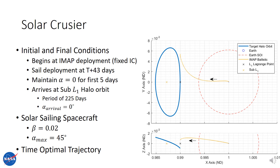NASA's Solar Cruiser mission concept is set to be a technology demonstration mission with the largest solar sail deployed to date. It's a secondary payload along with IMAP and will be deployed at a fixed initial condition, then coast ballistically for approximately 43 days along with IMAP. At T+43 days it will deploy its solar sail, followed by a five-day checkout period where it must maintain alpha equal to zero, before it can start actively targeting its destination: a sub-L1 halo orbit with a period of 225 days and a fixed alpha arrival of zero degrees.